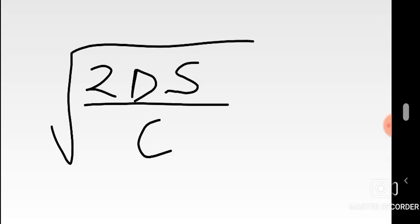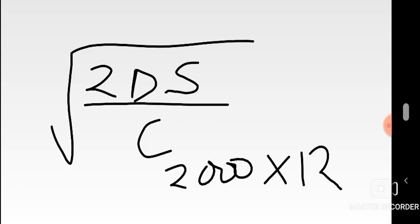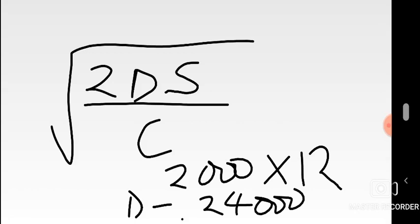The demand given is 2000 units per month. Since demand must be annual in the EOQ formula, multiply by 12, giving 24,000 units per year. Ordering cost S is 200 kwacha. Carrying cost C is 75% of the acquisition price. Since we start with the lowest acquisition price of 19 kwacha, carrying cost = 0.75 × 19.